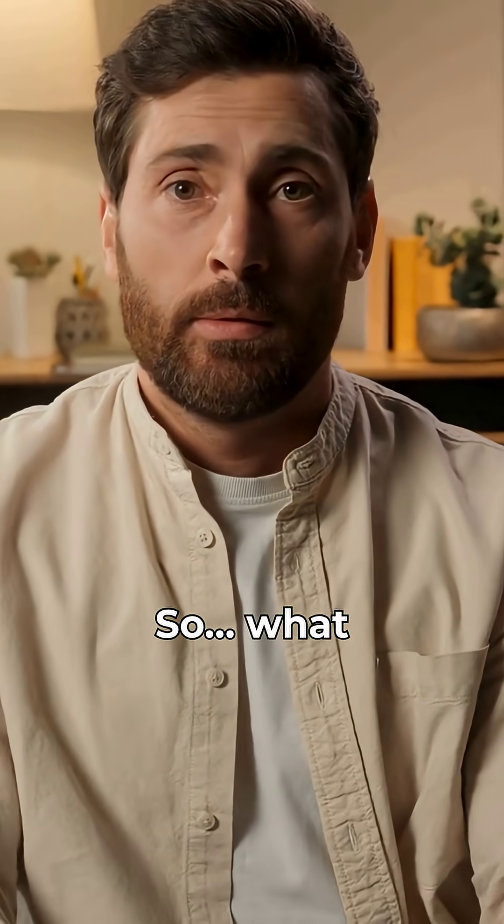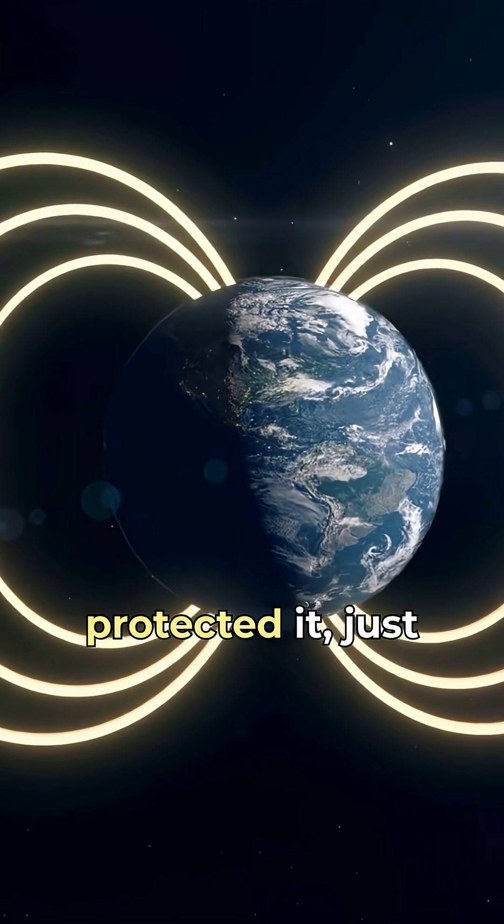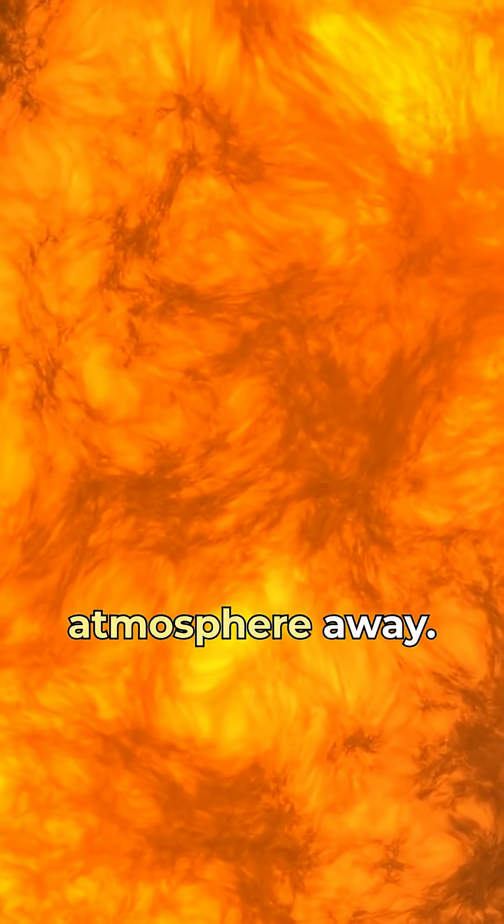So, what happened? Scientists believe Mars once had a magnetic field that protected it, just like Earth. But when that field collapsed, the sun stripped the atmosphere away.